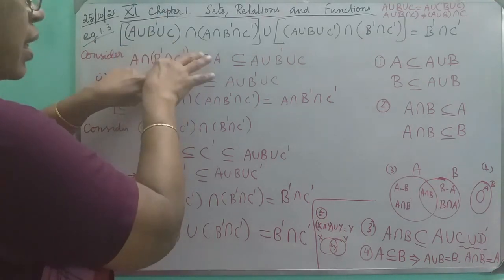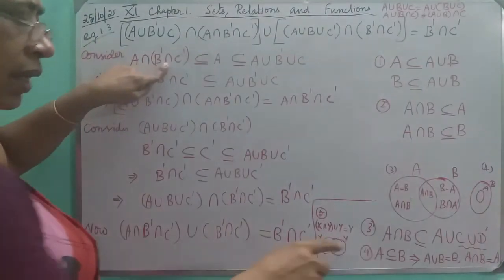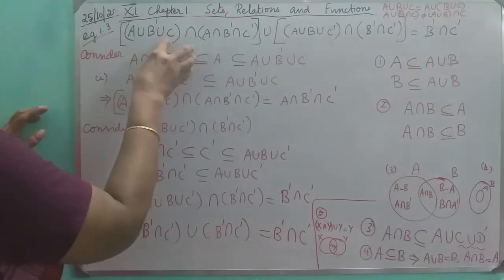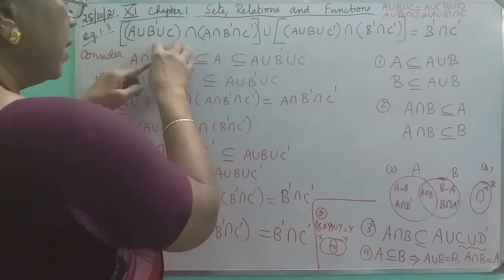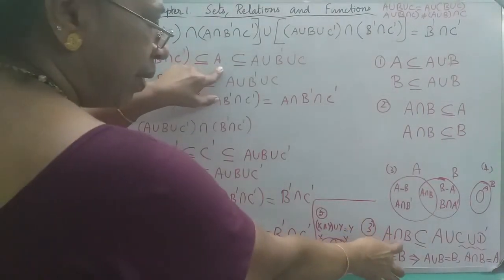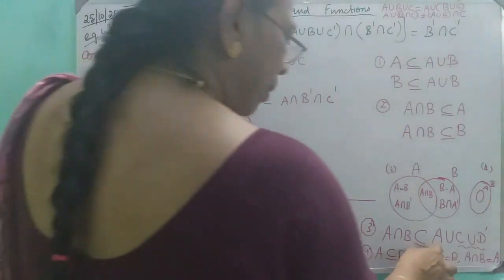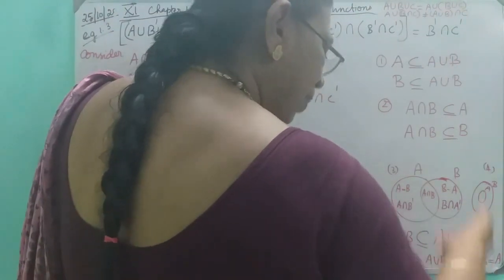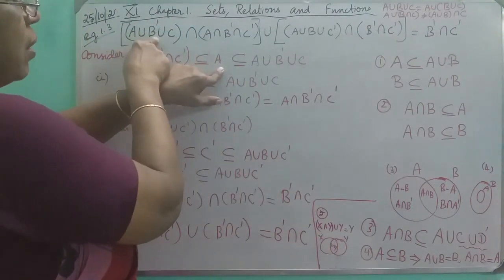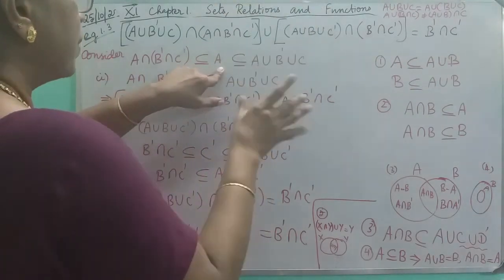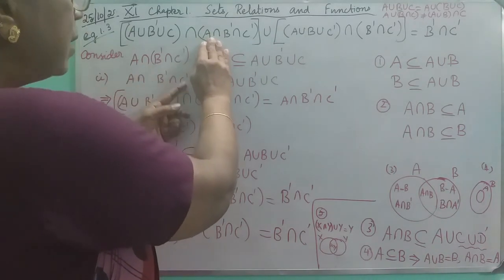The one rectangle represents a second size everywhere, so the second one. Therefore, what does this guy attach to? Now I'm going to talk to you. Now A intersections, B dash, intersection, C dash.